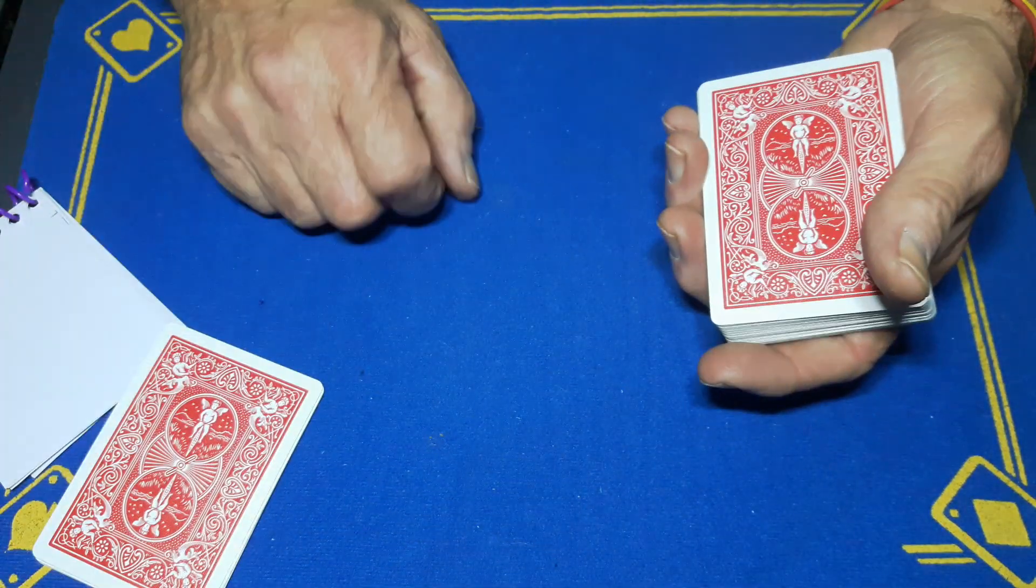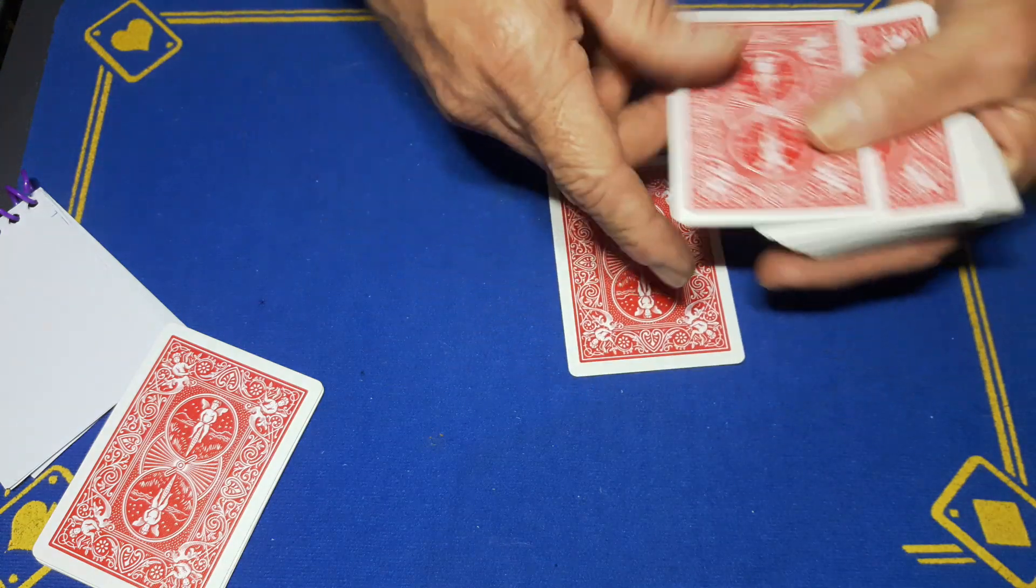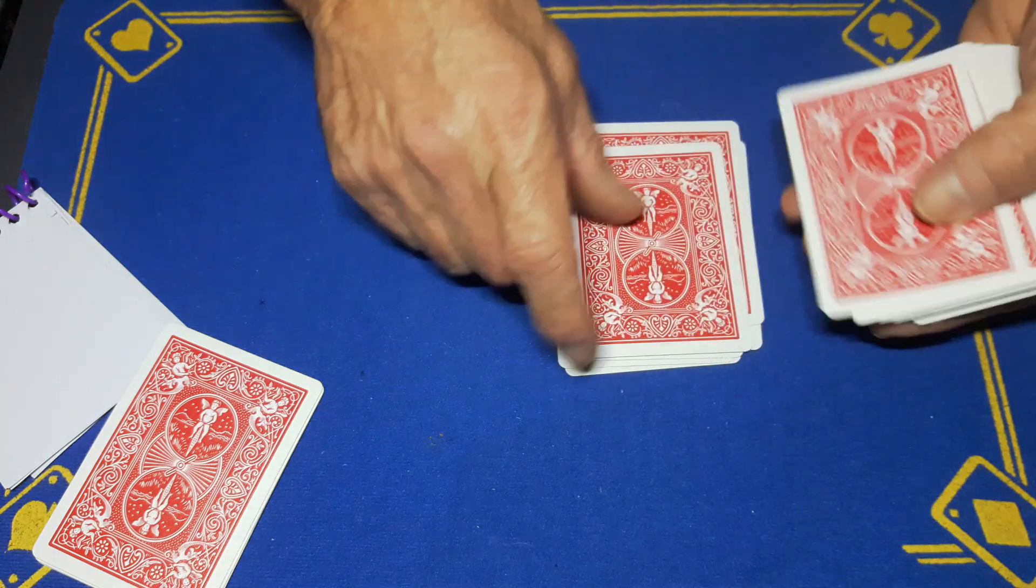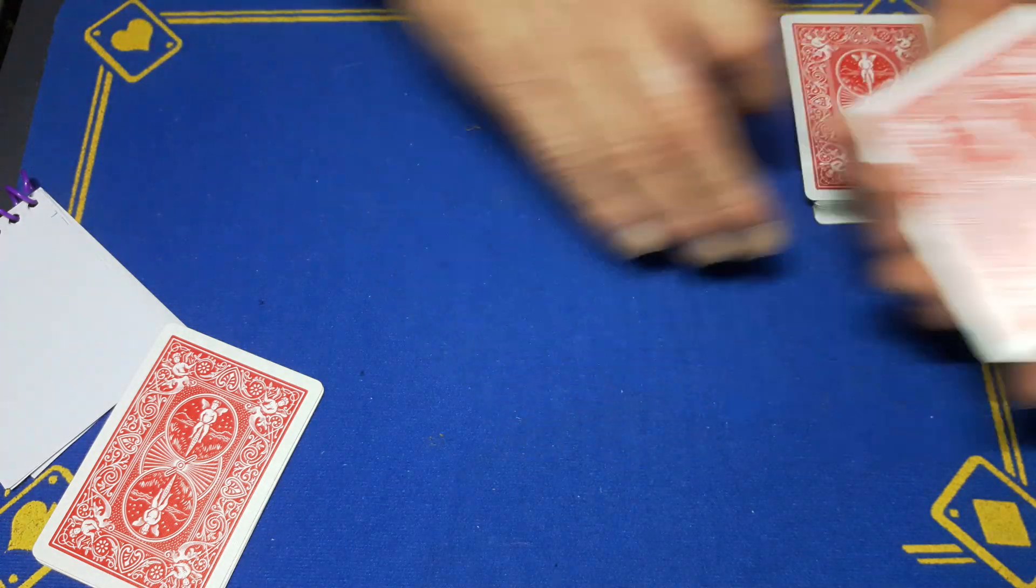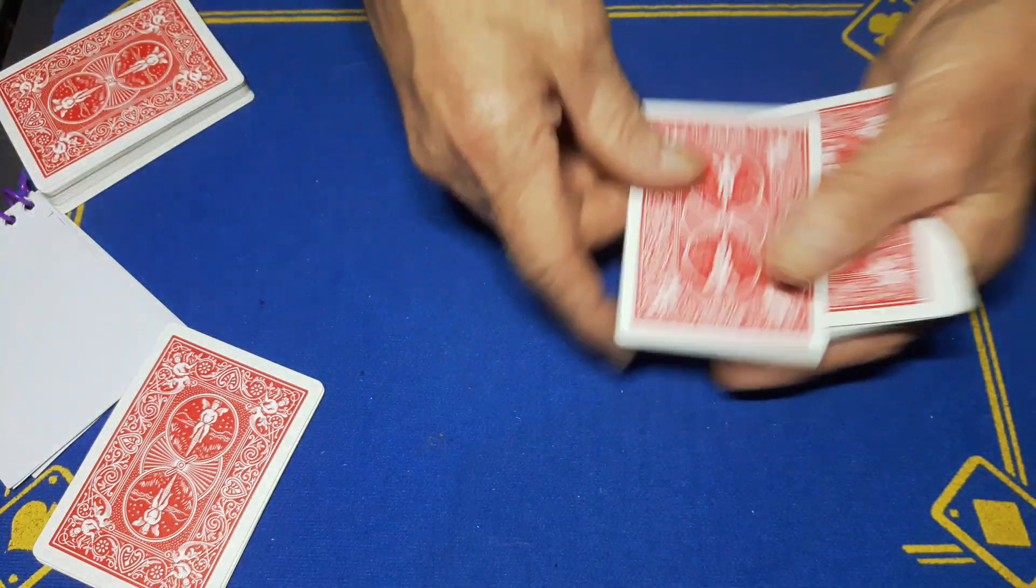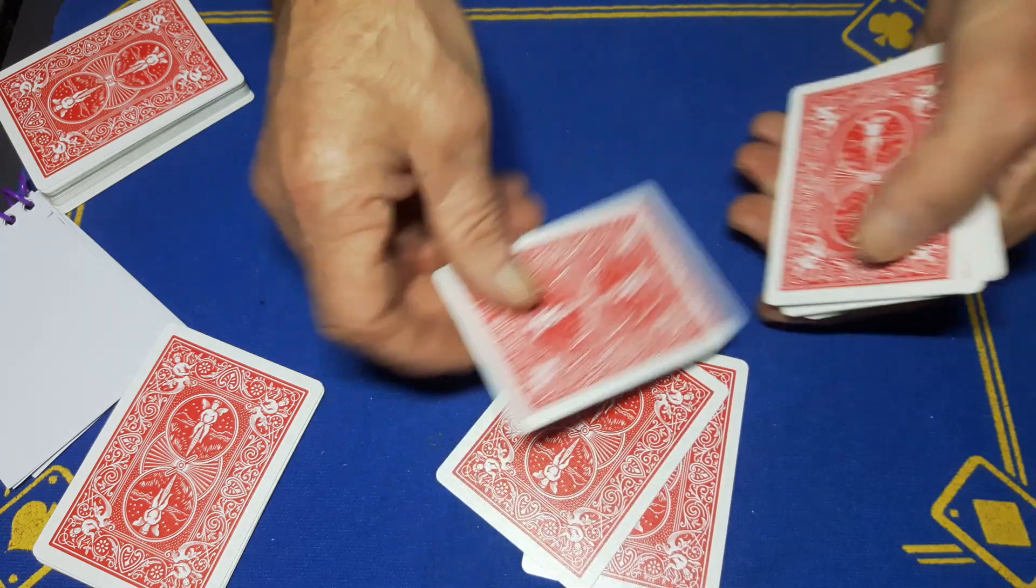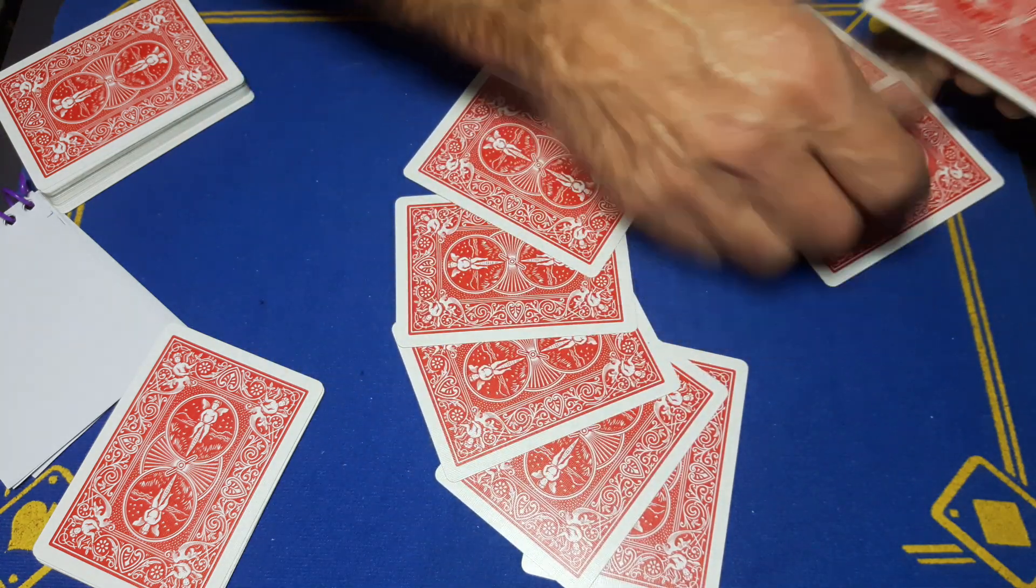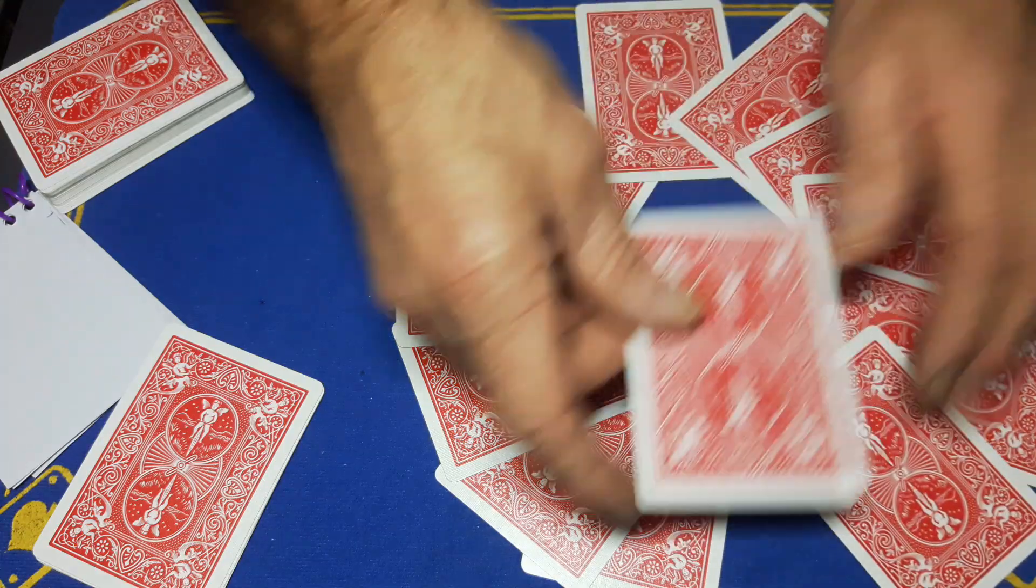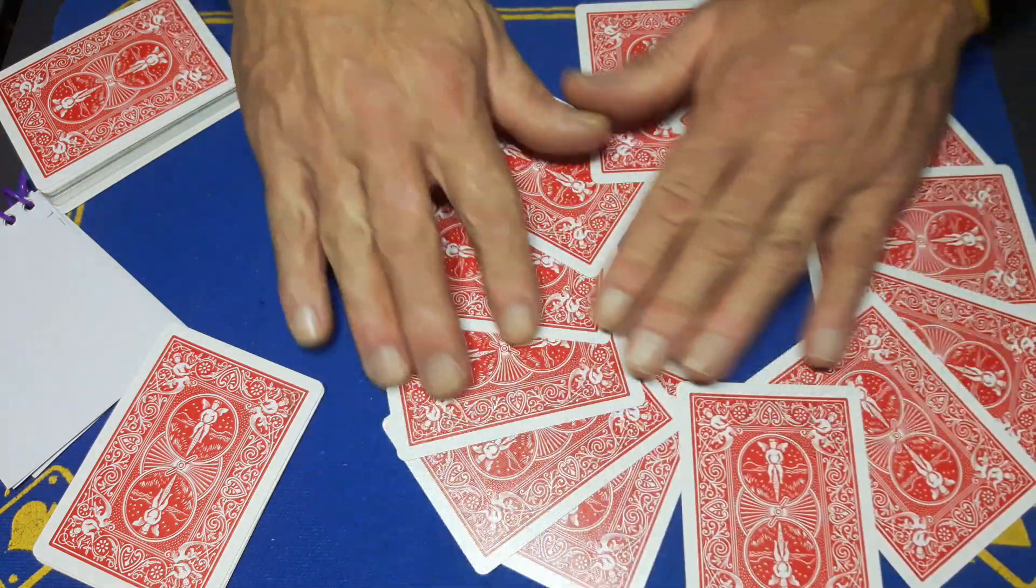We'll come back to these in a minute and we need a clock face: 12 cards, 1 2 3 4 5 6 7 8 9 10 11 12. I am just going to make a clock face with these cards starting at 1 2 3 4 5 6 7 8 9 10 11 and 12. So we've got a clock face.